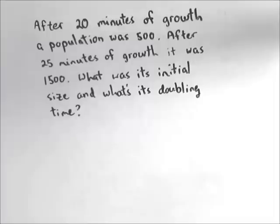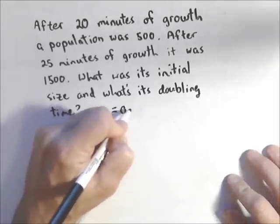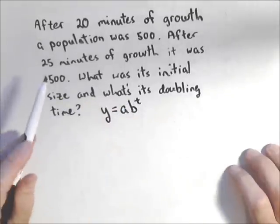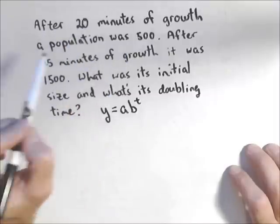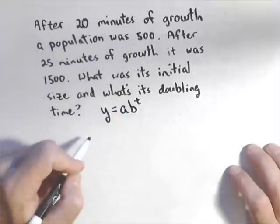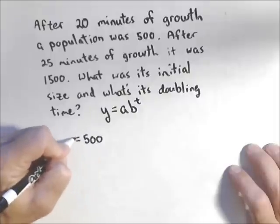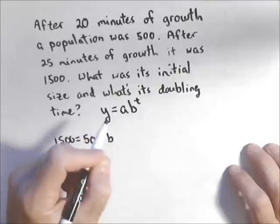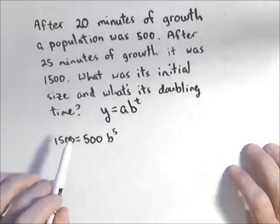To do so, the main thing we need is the growth factor. I'm going to use the form of the exponential y equals ab to the t, and a slick way we can do this is we can actually act as if 20 minutes is our initial to kind of speed things along. I can say, to go from 500 to 1,500, it took five minutes. That's enough information for me to find my base.